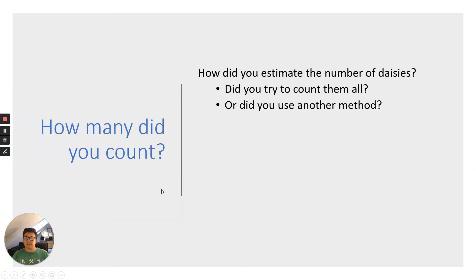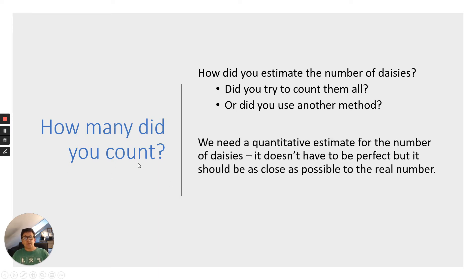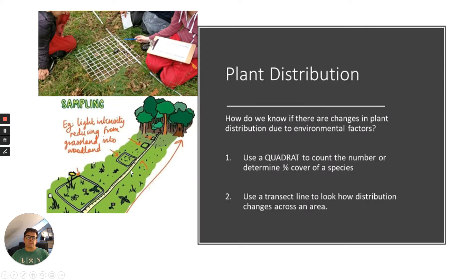How many did you count? Did you estimate, try to count them all, or use another method? What we're going to do now is work out a quantitative estimate for the number of daisies — as close as possible to the real number. We'll look at how plants are distributed: how many plants you find in a particular area, and if there are changes in plant distribution due to environmental factors.